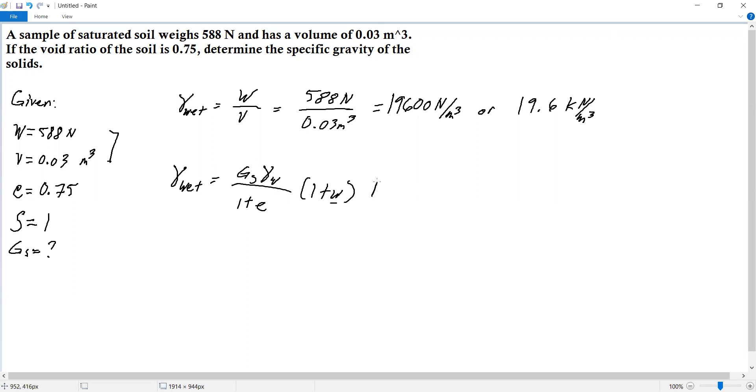To solve for the water content, we have a formula. Degree of saturation S is equal to w times Gs over e. So water content w is equal to e times S over Gs. Substituting, e is 0.75, times the degree of saturation which is 1, all over Gs. Simplifying, the water content is 0.75 over Gs.